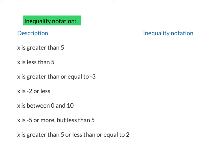The first notation we're going to look at today is inequality notation, which might already be familiar to you. On the left I've got descriptions, and on the right I'm going to write the inequality notation. So firstly, x is greater than 5 — I write x, the greater than symbol, and 5. I could also have written it with the symbol flipped the other way, meaning the same thing. What you need to make sure is that the greater than is in the correct place: the larger side of the symbol is next to x, showing x is on the larger side of 5.